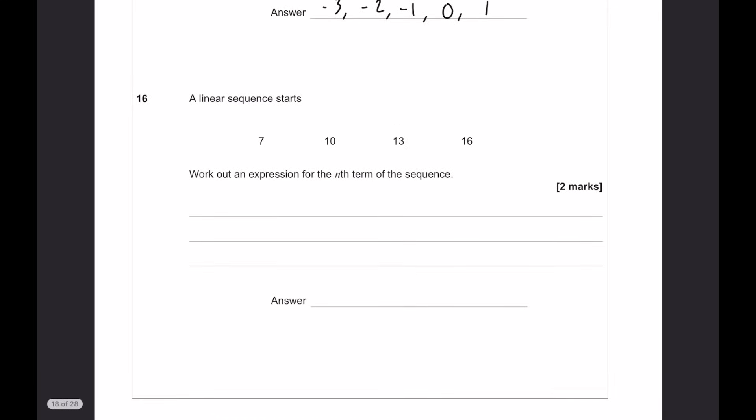A linear sequence starts as this. Work out an expression for the nth term of the sequence. What we can see straight away, we're adding 3 each time, so it's going to be 3n. The way I like to look at this is, if you're dealing with the 3 times table, so the first number in that is 3, the difference between the 3 and the first term in this sequence is plus 4, so your answer is 3n plus 4.